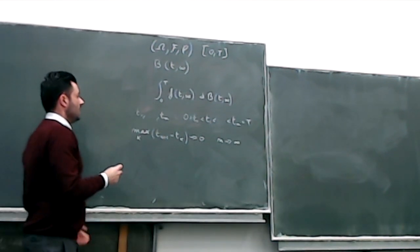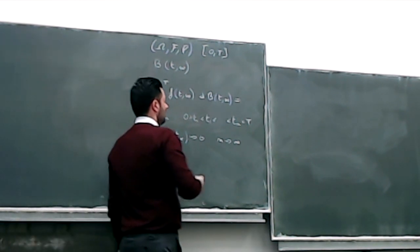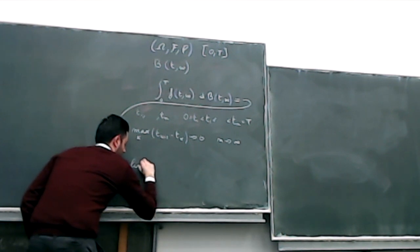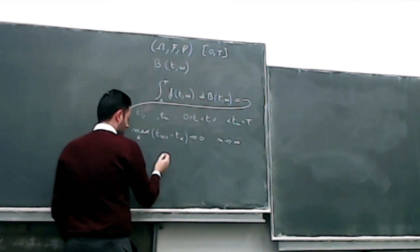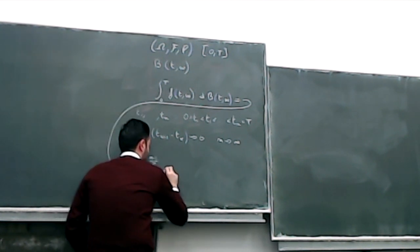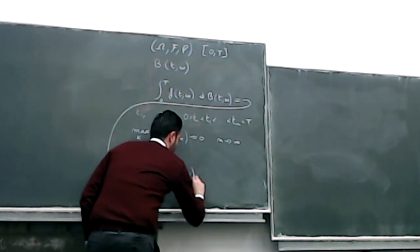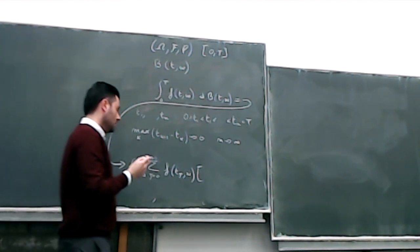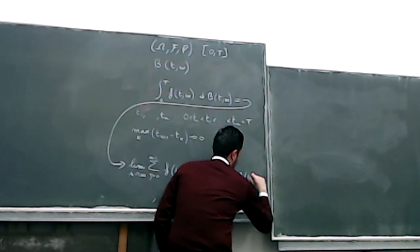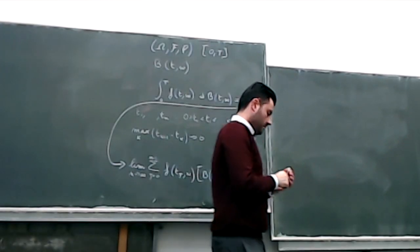If we assume this — that the mesh vanishes — then the spoiler is that I can define the Itô integral as the limit for n tending to infinity of the sum for j from 0 to n−1 of f(T_j, ω) times the corresponding increment of Brownian motion, that is, B(T_{j+1}, ω) − B(T_j, ω). So this will be our definition of the integral.